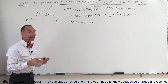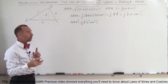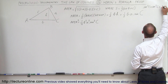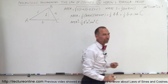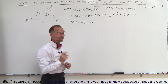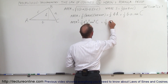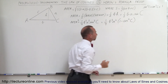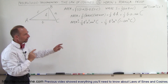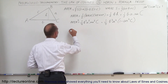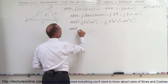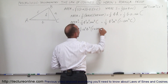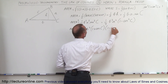We use the trigonometric identity: sine squared c plus cosine squared c equals one, so sine squared c equals one minus cosine squared c. Therefore, area squared equals one-quarter b squared a squared times one minus cosine squared of c. Since that's a difference of two squares, we can write area squared equals one-quarter a squared b squared times the quantity one plus cosine c times one minus cosine c.